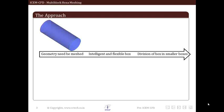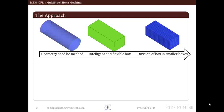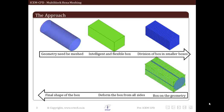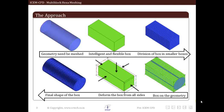First step, we get the geometry. Then we create a box which will be called as the blocking box. Then we divide this box into smaller boxes for meshing purposes. Next, we put the box in geometry. Then we deform the box while making it similar to the shape of the geometry that we need to mesh. Then the box finally takes the size and shape of the geometry that we need to mesh.